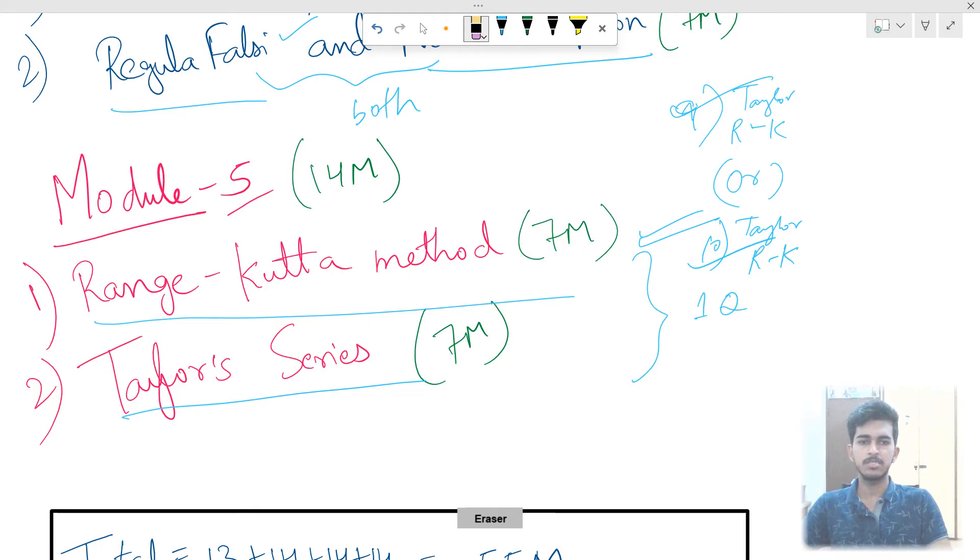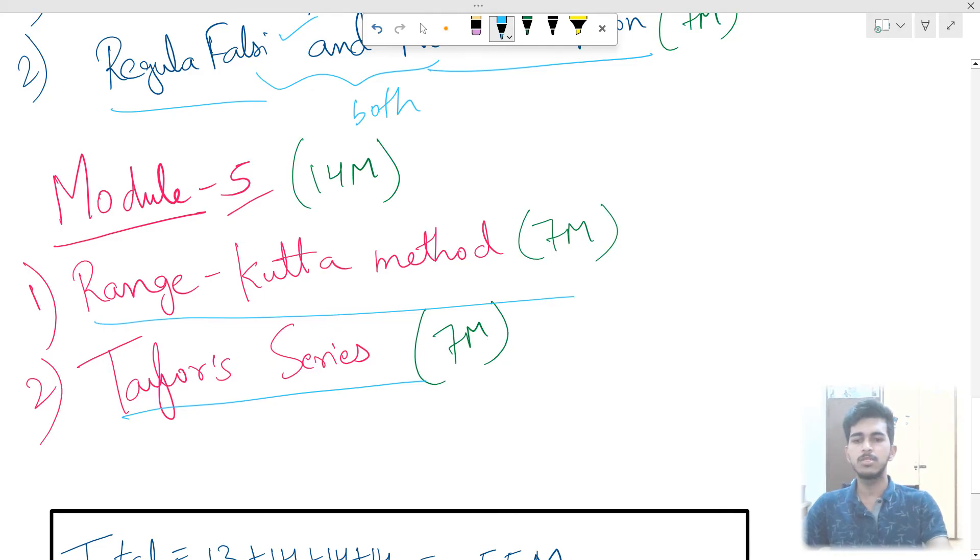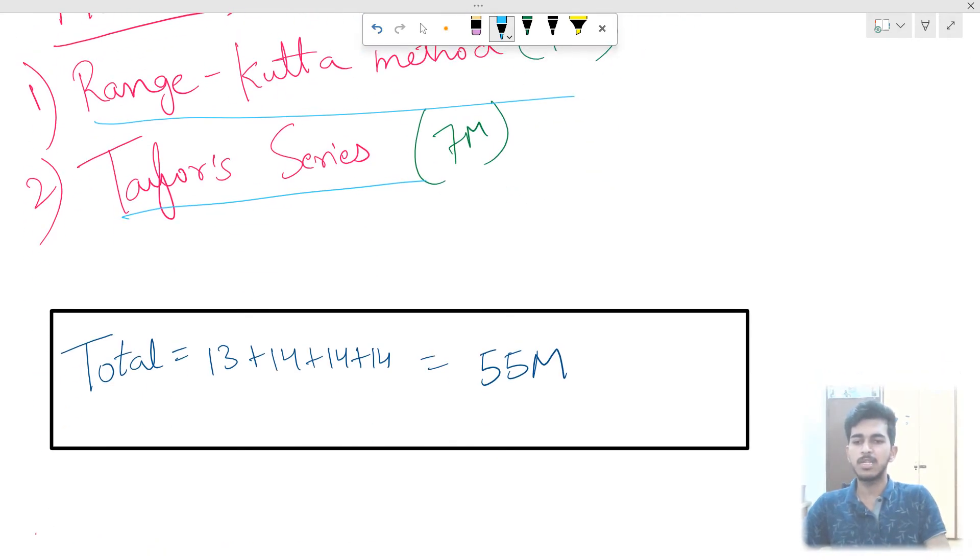So this is simple. So if you want to get a new attempt: 13 marks model 1, 14 marks model 2, 14 marks model 4, 14 marks model 5. So if you want to get a new, 55 marks you want to get.